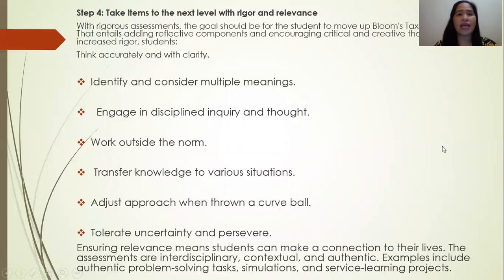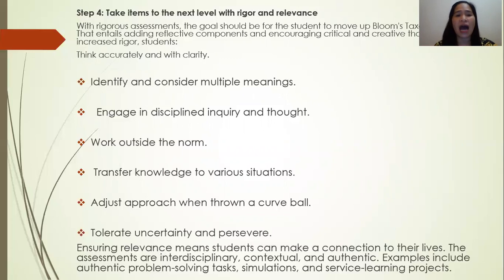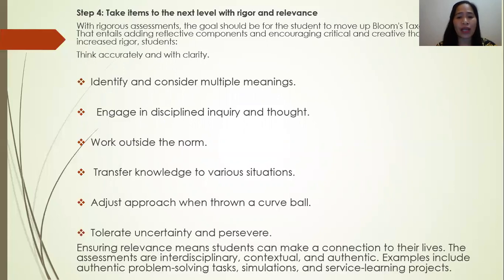Step four: take items to the next level with rigor and relevance. With rigorous assessment, students think accurately and with clarity, identify and consider multiple meanings, engage in disciplined inquiry and thought, work outside the norm, transfer knowledge to various situations, adjust their approach when thrown a curve ball, and tolerate uncertainty and persevere. Ensuring relevance means students can make a connection to their lives. The assessments are interdisciplinary, contextual, and authentic. Examples include authentic problem-solving tasks, simulations, and service learning projects.